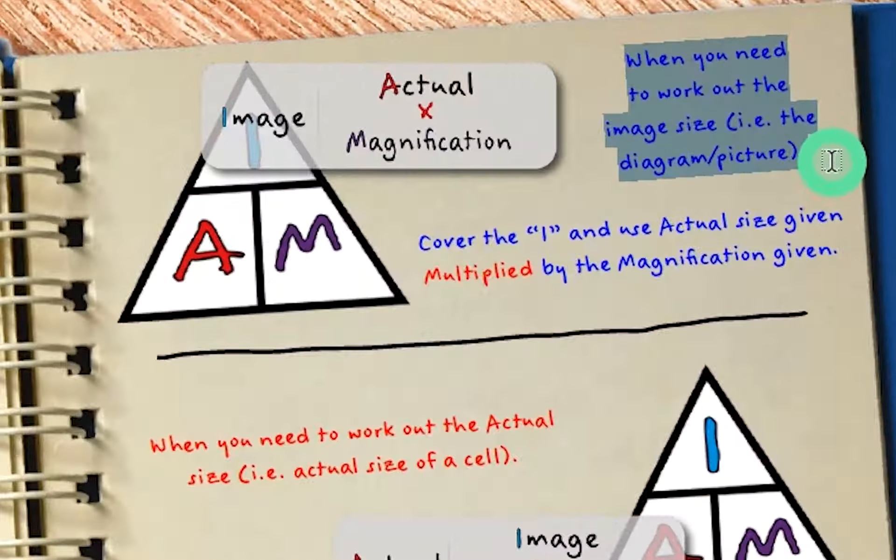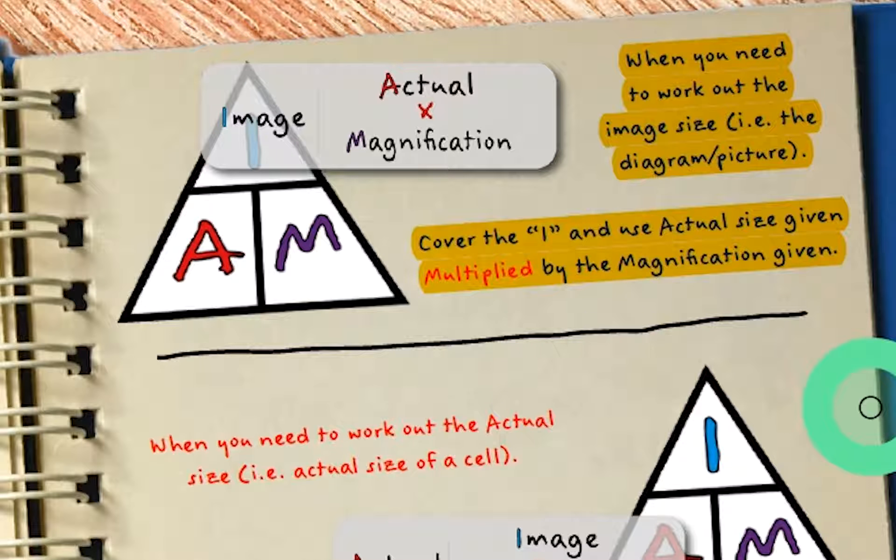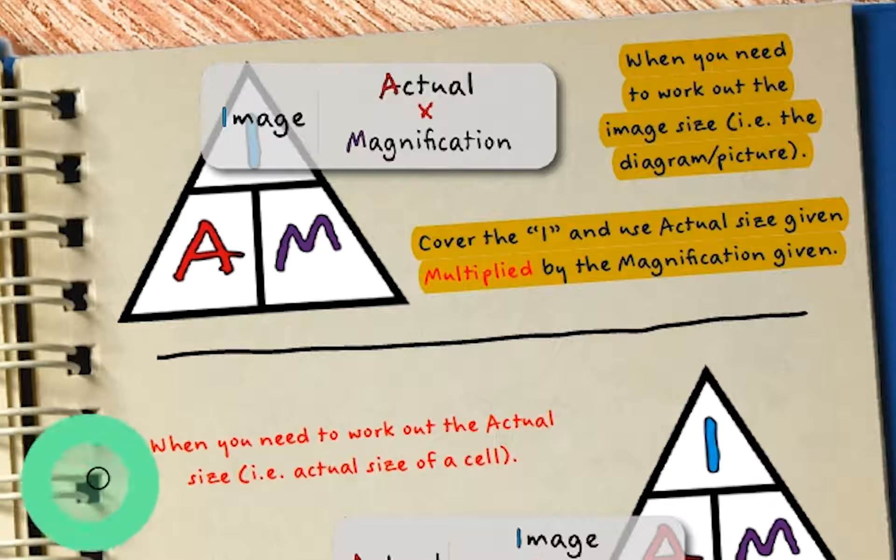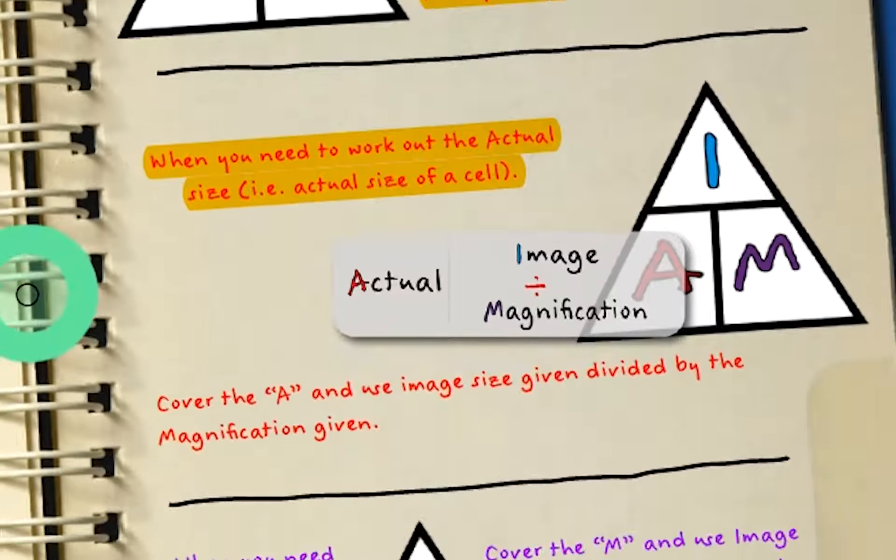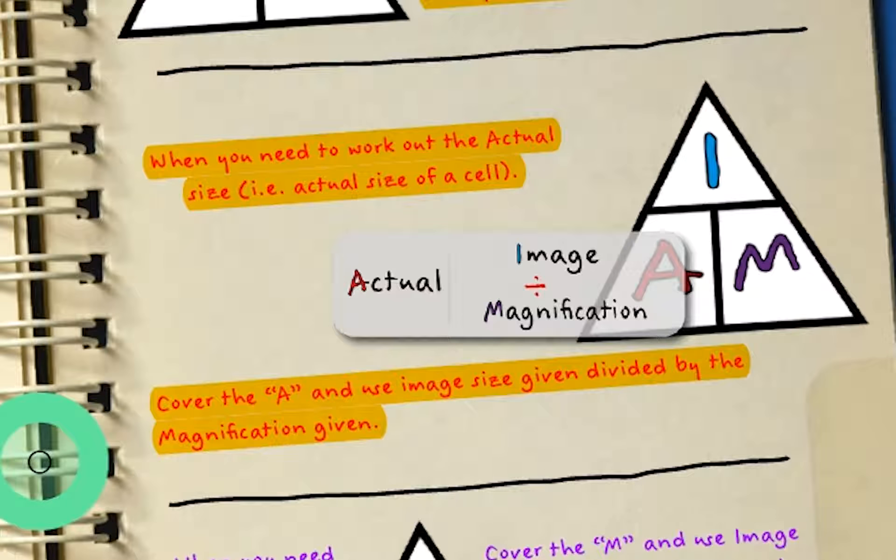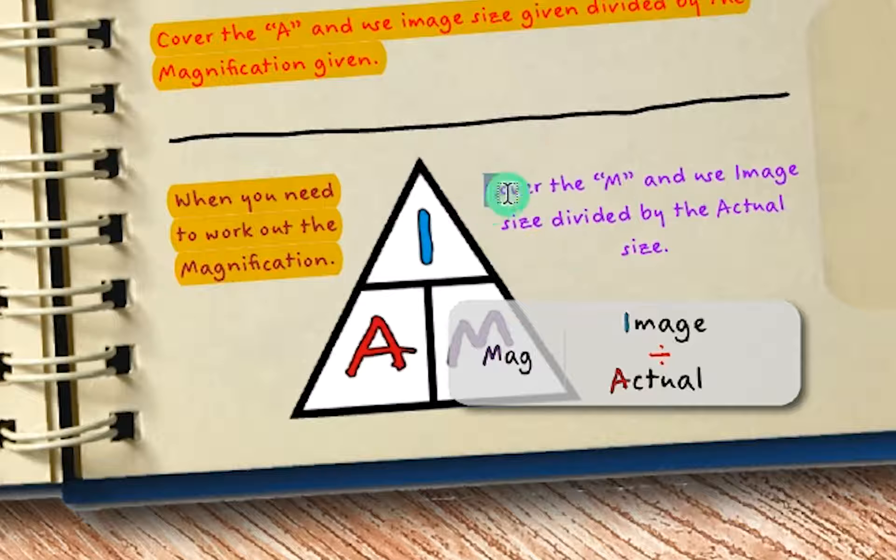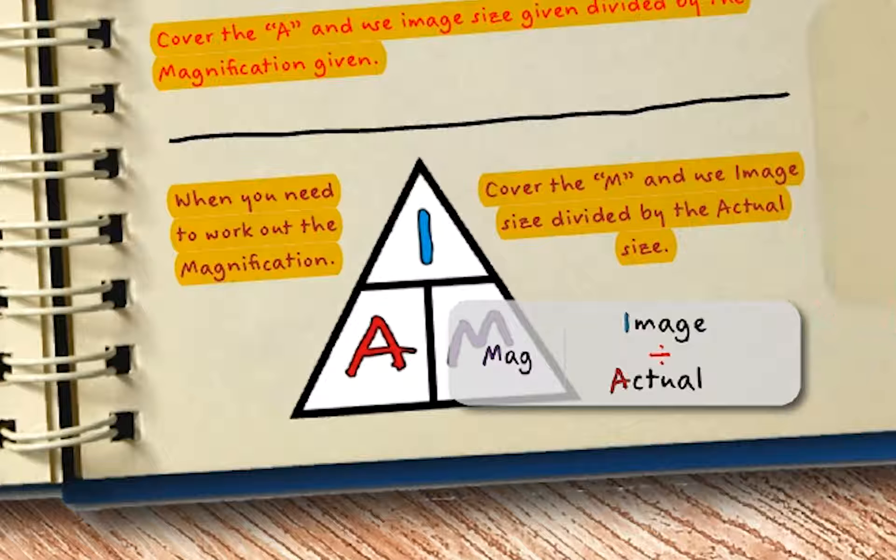So the I am triangle can be used to work out the image size. So if you've been given the magnification and the actual size, you can go actual multiplied by magnification to give you the size of the image. More commonly though, you may be asked to find out the actual size of something. So here if we're going to find out the actual size, we cover up the A and then we're left with image over magnification. And finally, you may need to work out the magnification but you've been given the image size and the actual size. So here we cover over magnification and you're left with image over actual. So you simply divide the size of the image given by the actual size of the image given.